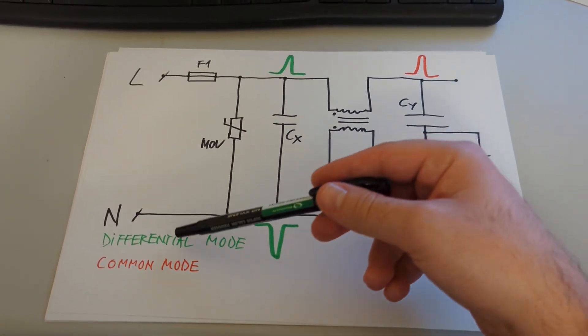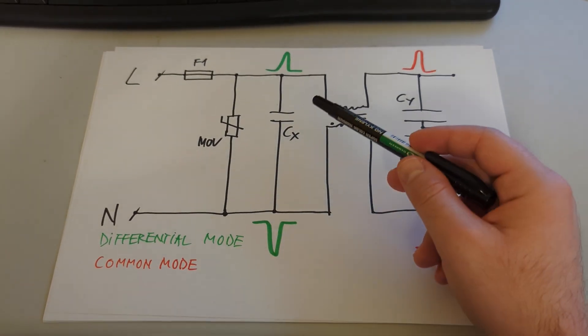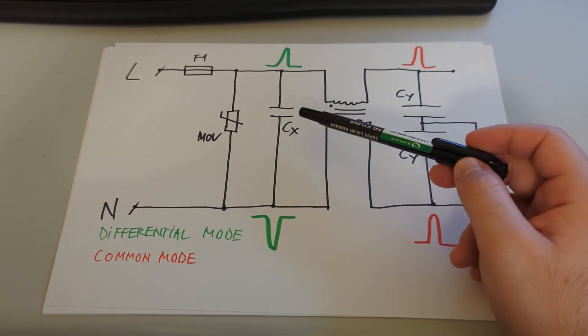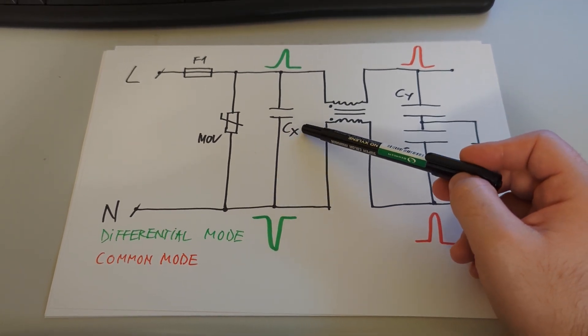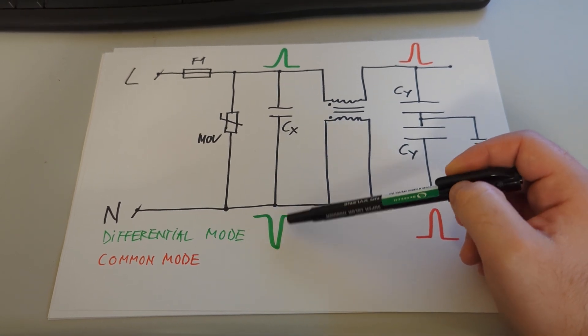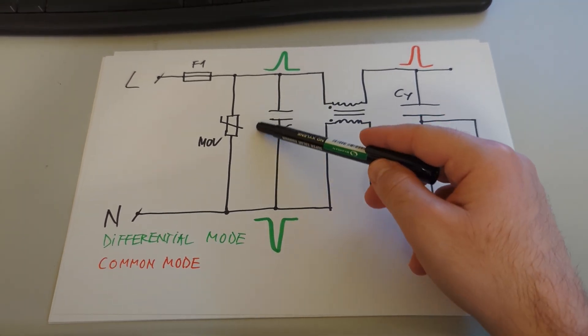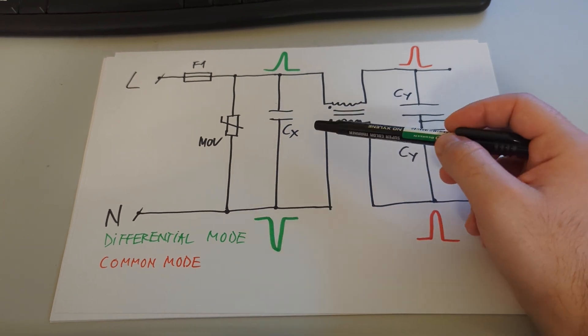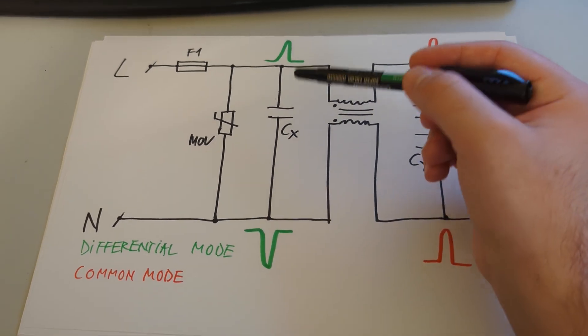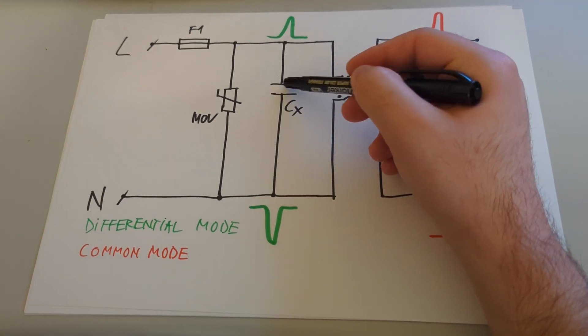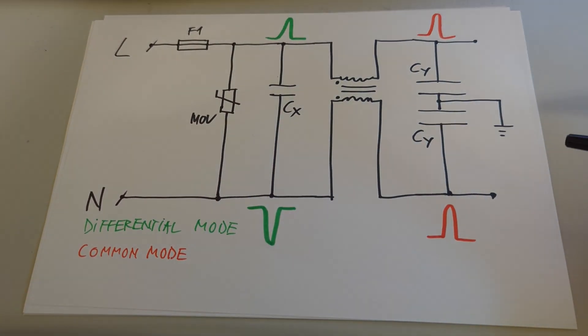And for such cases, we have the class X safety capacitor to take care of this. So what happens here is that the class X safety capacitor is basically so small that it is, let's say, invisible for 50 hertz. However, as soon as we have some high frequency noise here,